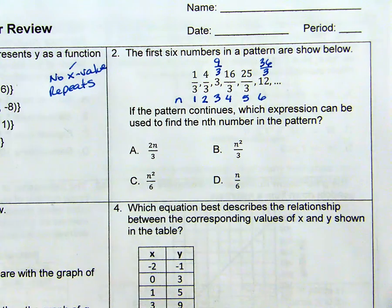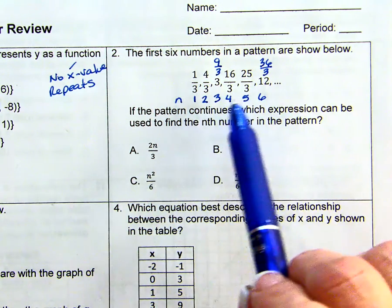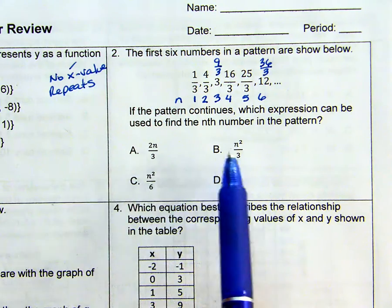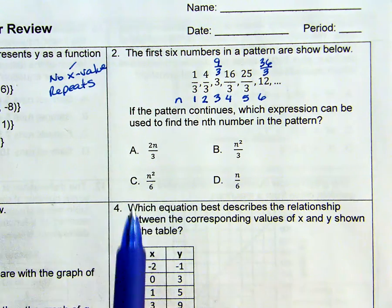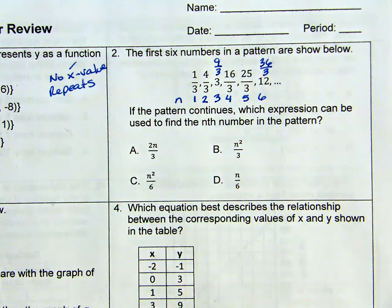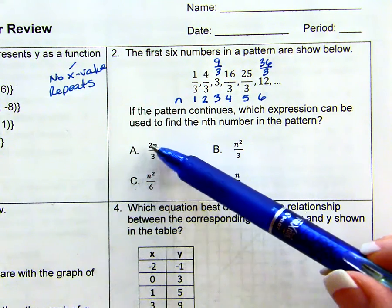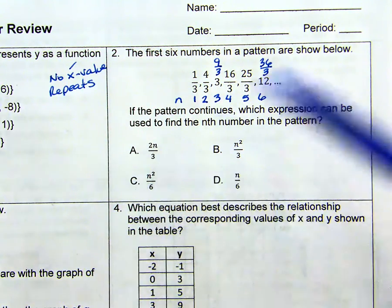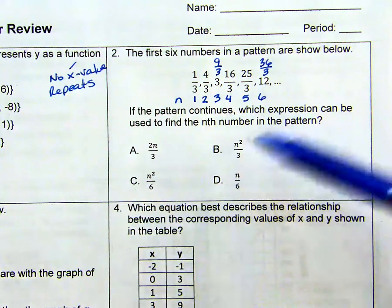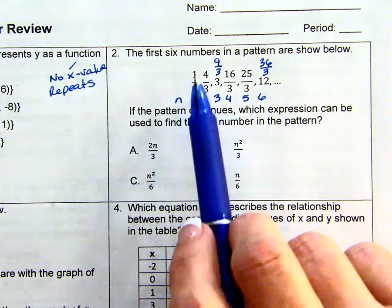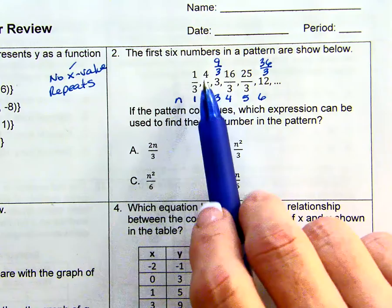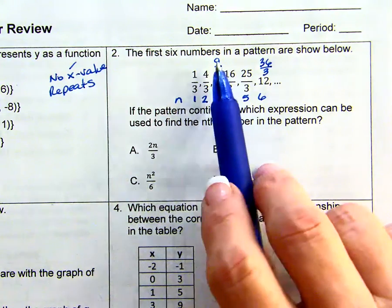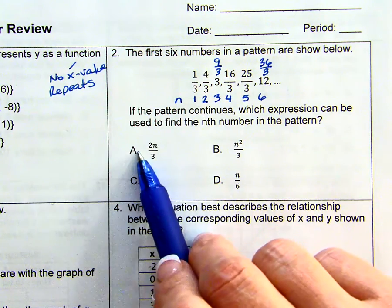So now I can look at this pattern. Notice that all the denominators are a 3. So I need a 3 down here. Looks like C and D are not going to be my answer choice. So this says take 2 times n. This says take n and square it. So if I double 1, I don't get 1. If I double 2, I get a 4. If I double 3, I don't get a 6. So it should not be choice A.